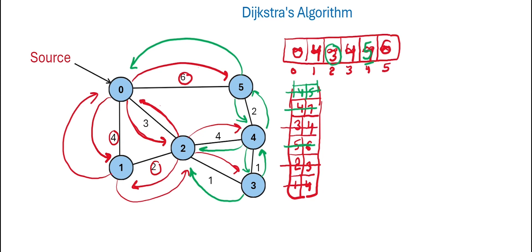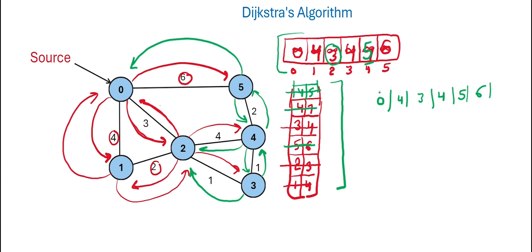Note that node 4 was inserted twice into the priority queue. We can use a hash map with the priority queue to reduce redundant insertions, but this doesn't impact time complexity significantly, so here we use only the priority queue. Now that the priority queue is empty, the final shortest distances from source node 0 to all nodes are: 0, 4, 3, 4, 5, 6.